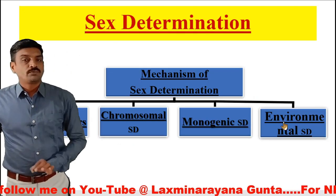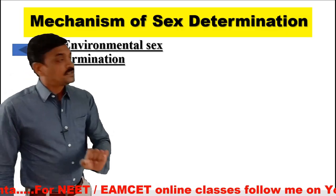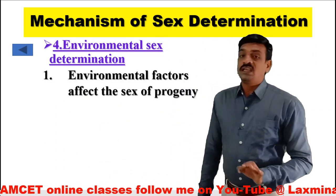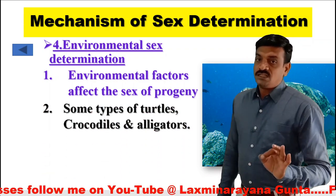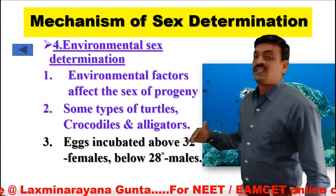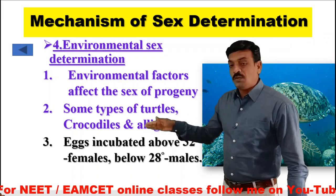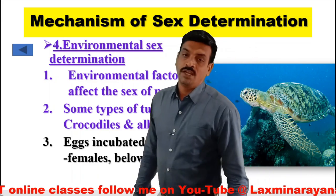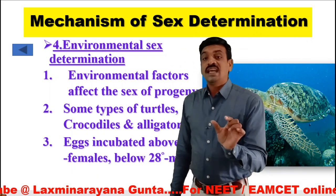The last and most important mechanism is environmental sex determination, which we can observe in turtles, crocodiles, alligators, etc., where environmental factors affect the sex of the progeny. Here, if the eggs are incubated above 32 degrees Celsius, they become female. If the eggs are incubated below 28 degrees Celsius, they become male. In between — 28 to 32 degrees — they become intersex.